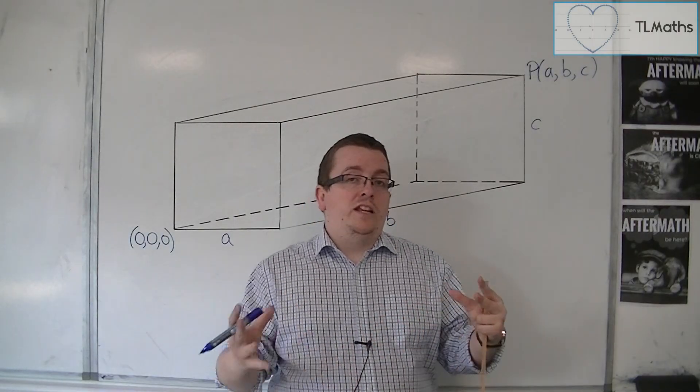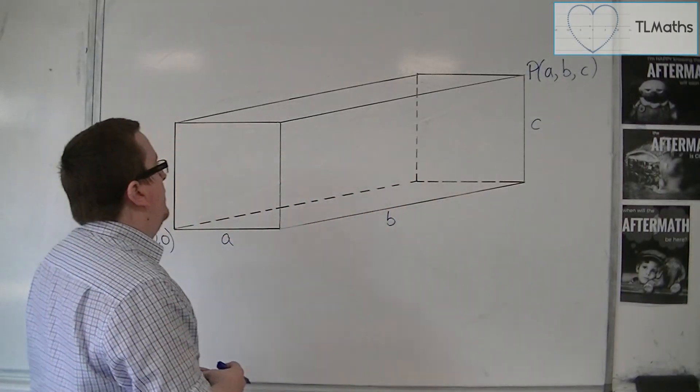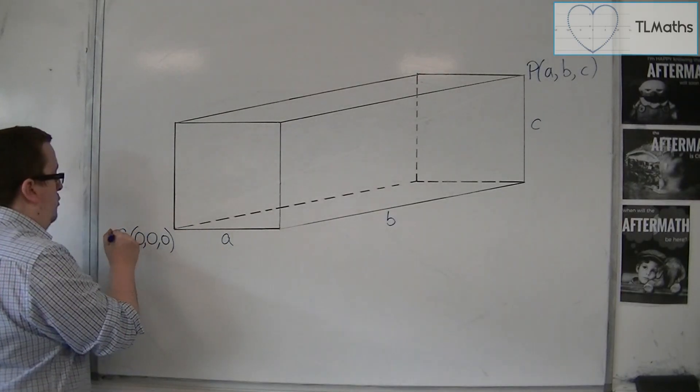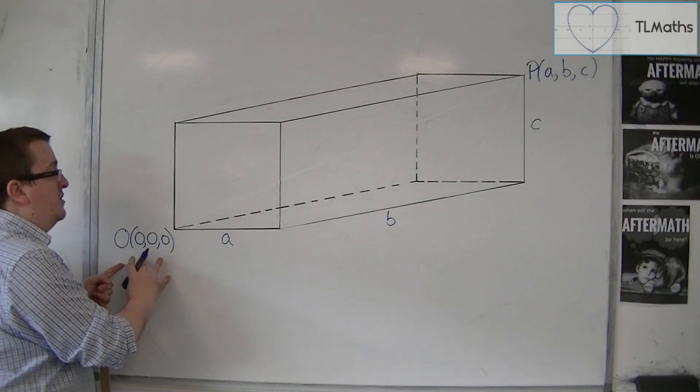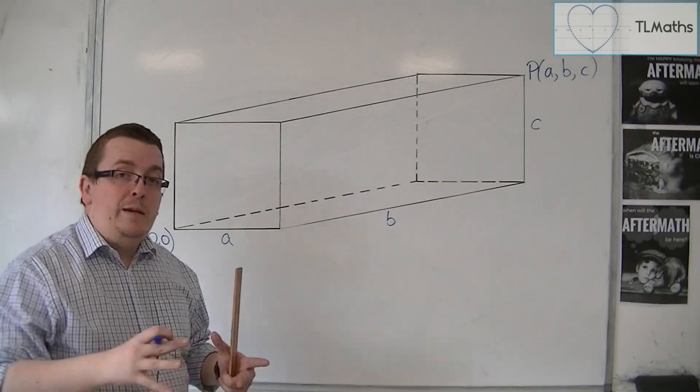Effectively, we'll find the length of a vector or the magnitude of a vector. Let's say we want to find the length of the vector that goes from the origin O at (0,0,0) up to P, which has coordinates (A,B,C).